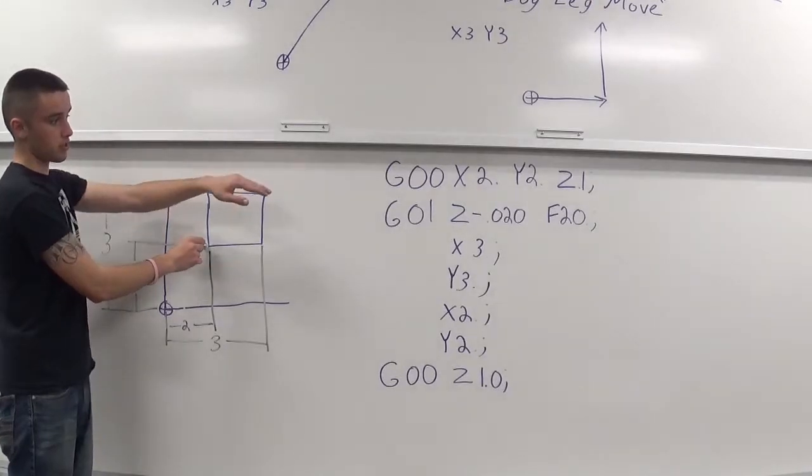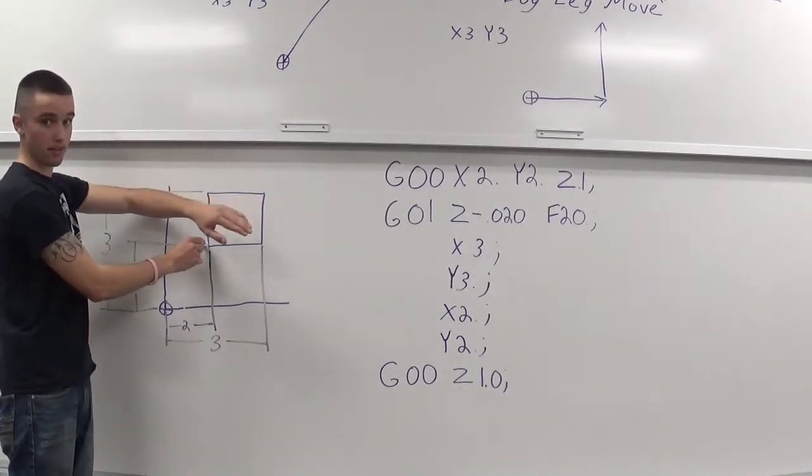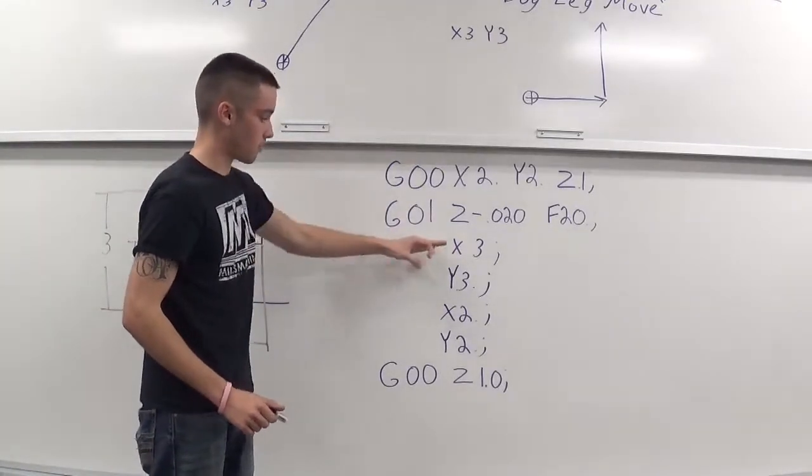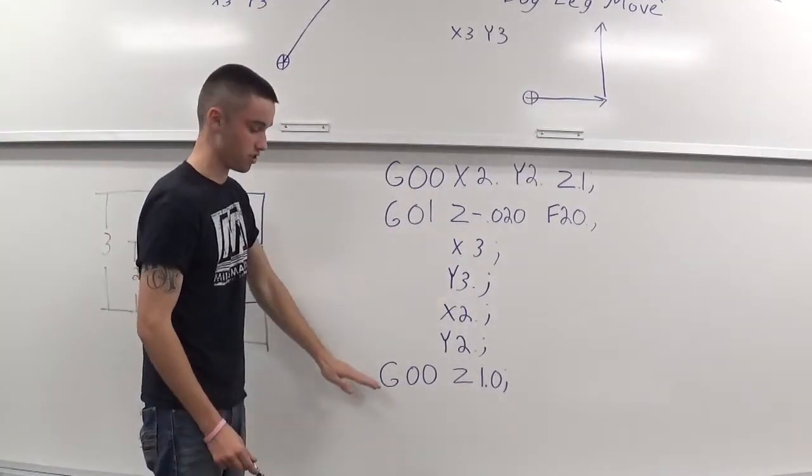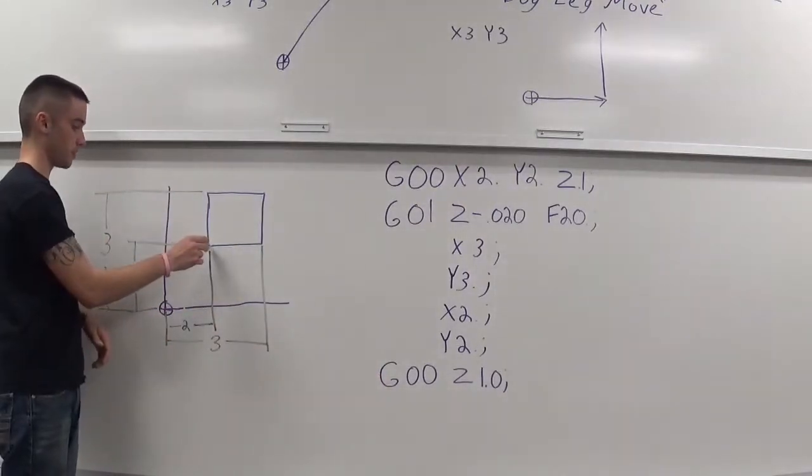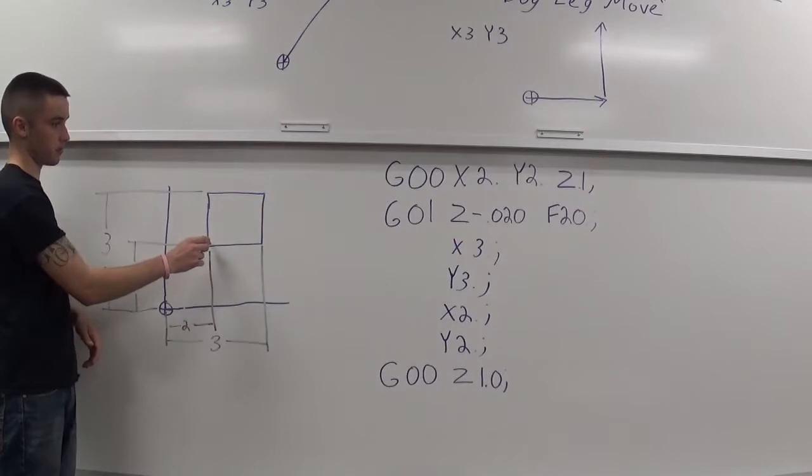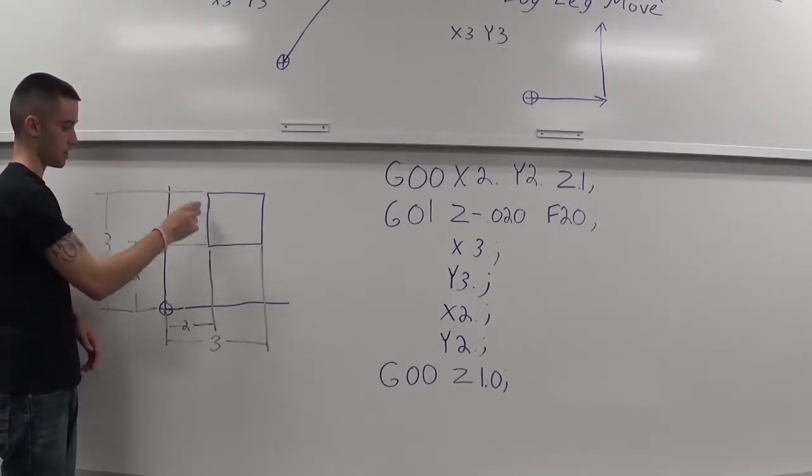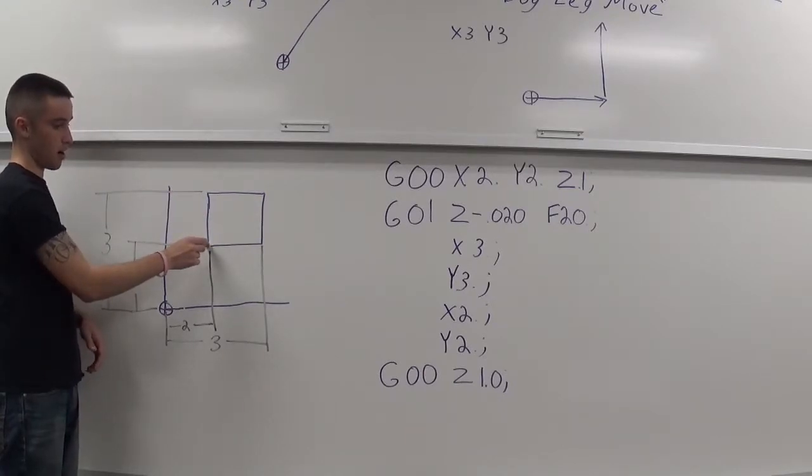And now, I'm going to be going over to an x of 3. Now, remember, G00 and G01 are modal commands. So, I don't have to call it up every time. G01 is going to stay active for all these lines of code until I call up this G00. So, here I am into my work piece at x of 2, y of 2. Moving over to an x of 3, y of 3, back to x of 2, and down to y of 2.